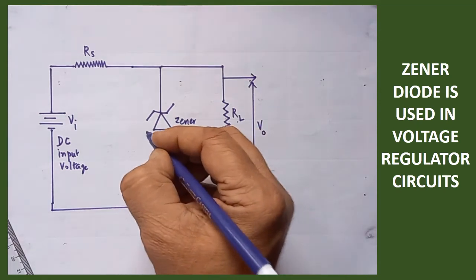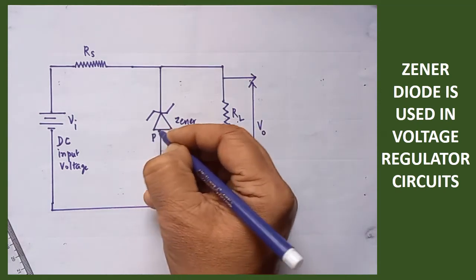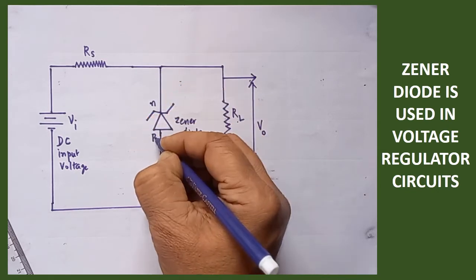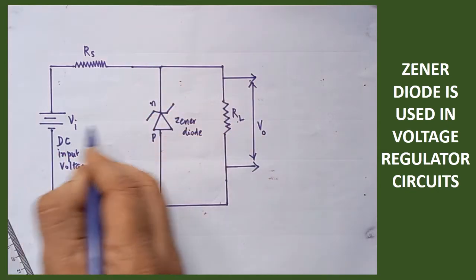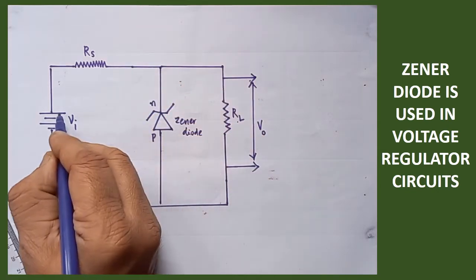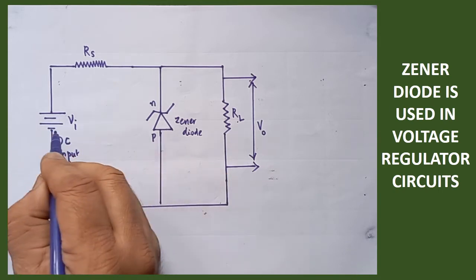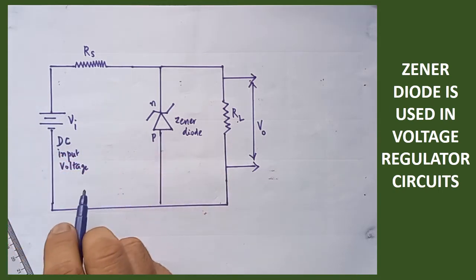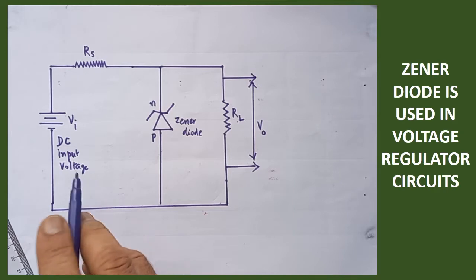The P end of the diode and the N end of the diode — the P end is connected with negative and the N end is connected with positive. The Zener diode is connected in the reverse bias connection. You should know that.